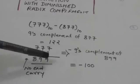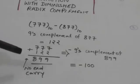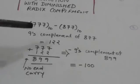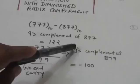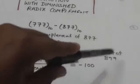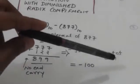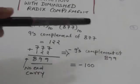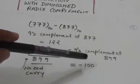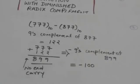When we add them, the sum is 899 and no end carry is produced. So the result would be minus the 9's complement of 899. The 9's complement of 899 is 100, so minus the 9's complement of 899 is minus 100. Therefore 777 minus 877 is minus 100.